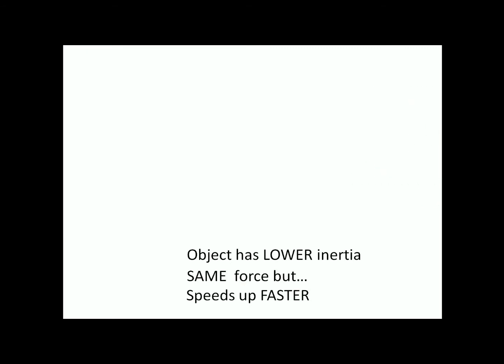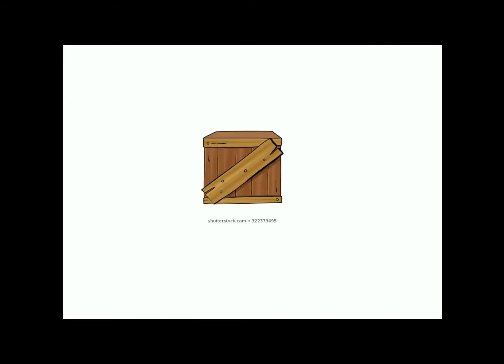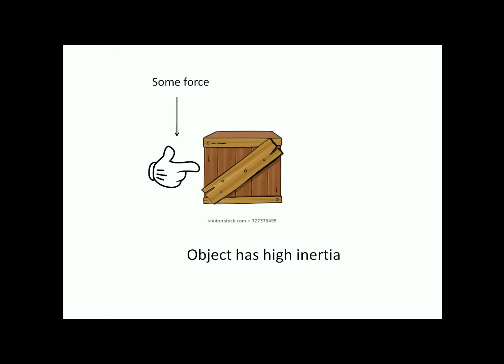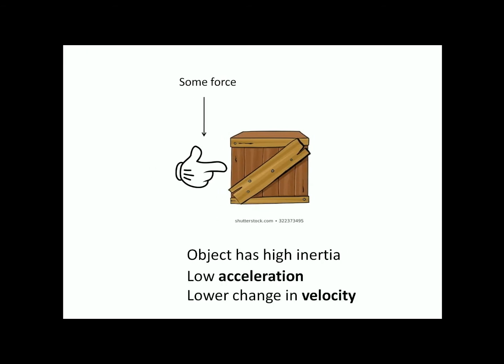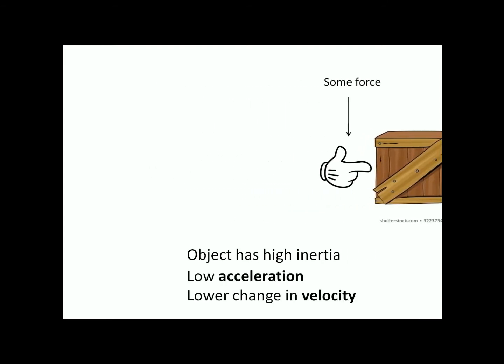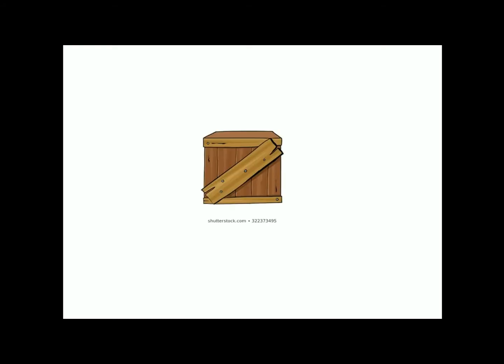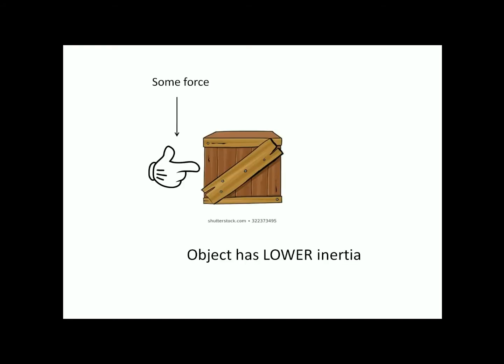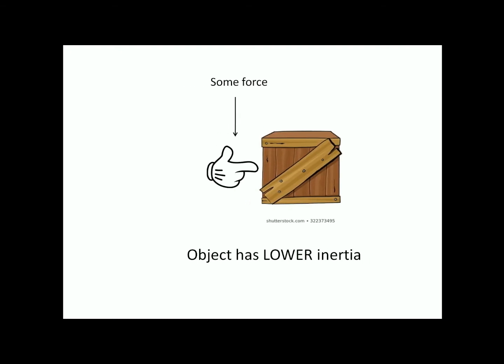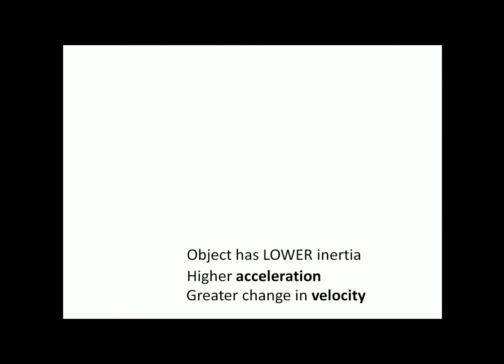Using more formal terms: if I apply a force to an object and the object has high inertia, it'll have a low acceleration — a lower change in velocity, so it's not going to speed up as quickly. And if I had a lower inertia and applied the same force, it'll have a higher acceleration or greater change in velocity.